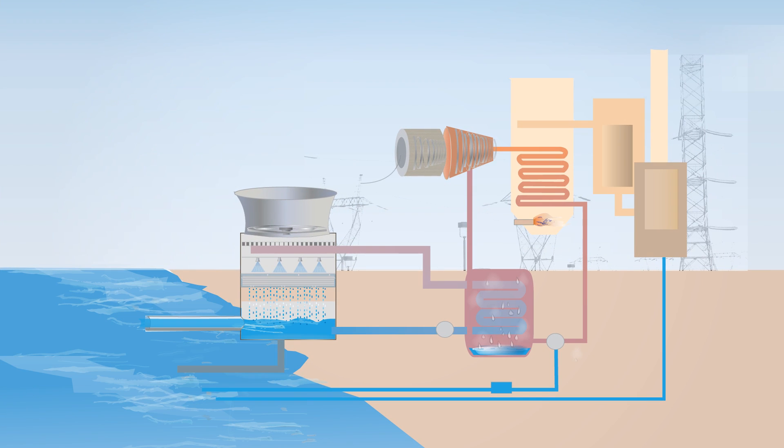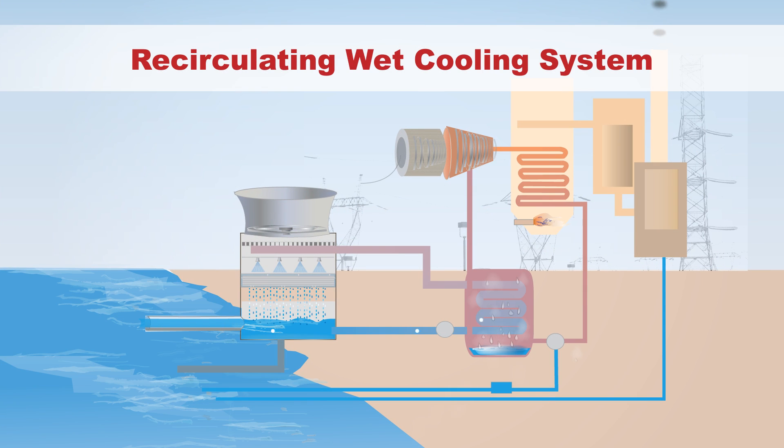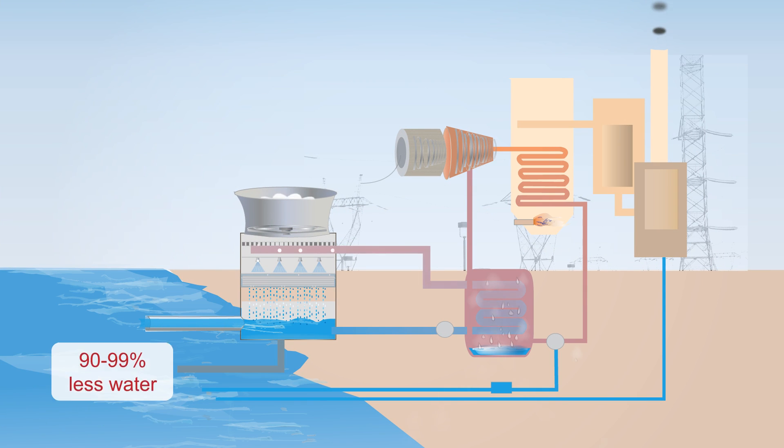The next option is a recirculating wet cooling system. This cooling system withdraws 90 to 99 percent less water than a once-through system, only about 600 gallons per megawatt-hour. However, it loses most of it, 450 gallons per megawatt-hour, to evaporation.